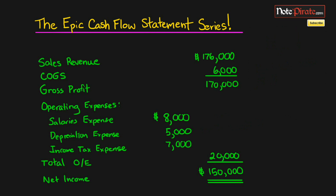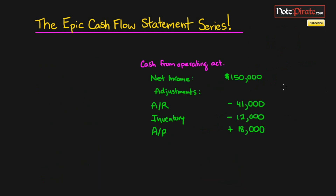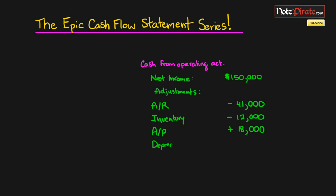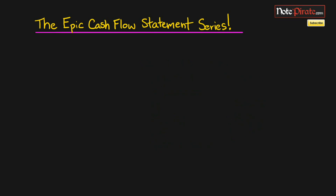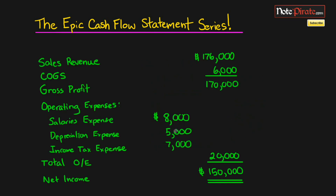Let's go to our cash flow statement and add back in the depreciation expense. It was five thousand dollars, so we're just going to add that back in. Then if we go back to the income statement, we can see that the last item is income tax expense at the bottom for seven thousand dollars.